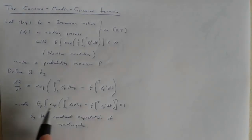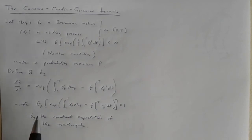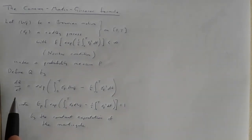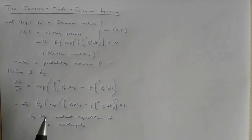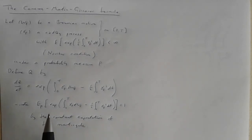So: positive-valued random variable, mean one — therefore this is a valid change of measure, and that's the Cameron-Martin-Girsanov change of measure. But it still doesn't really explain why we want to do this, or what's so good about this particular change of measure.